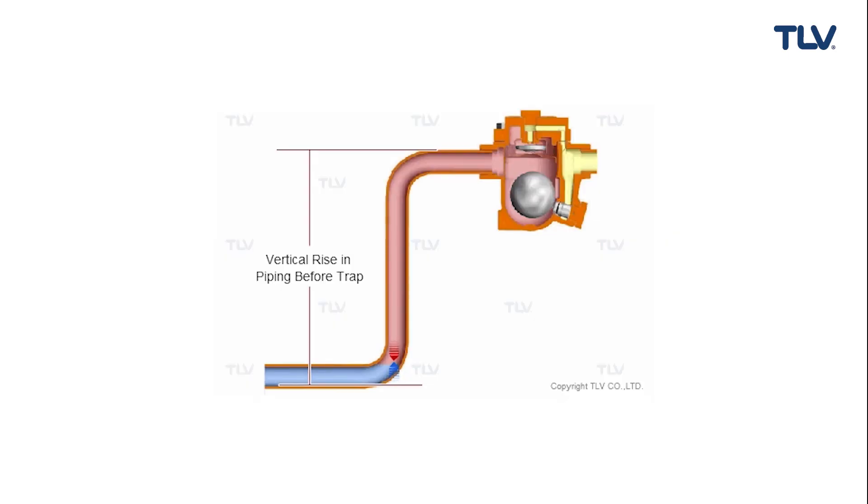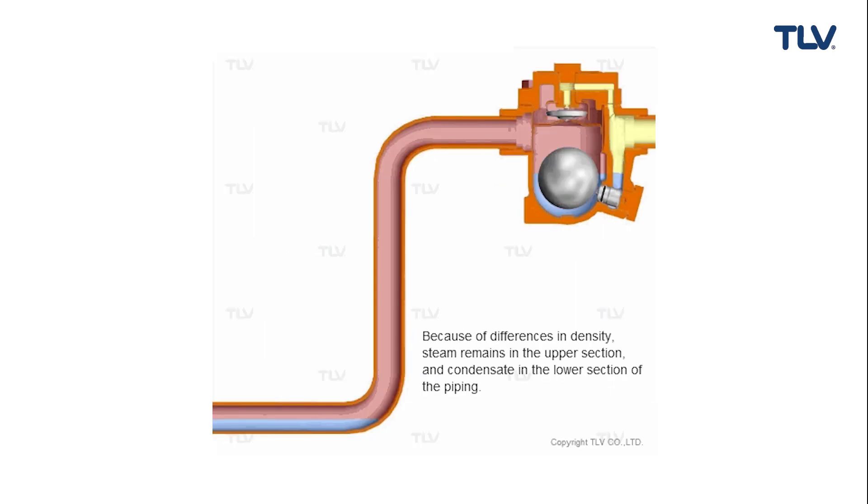Condensate and steam at the inlet side of a trap experience the same inlet pressure, because traps are designed to discharge condensate with minimal steam loss. So steam, which has a lower density than condensate, will logically rise above the condensate when there is a vertical rise and enter the trap before the condensate, causing the valve to shut.